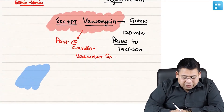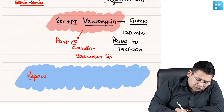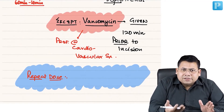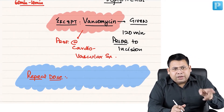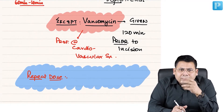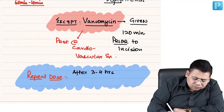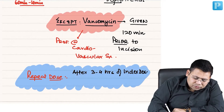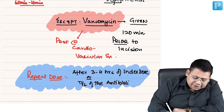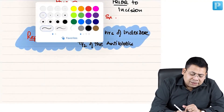When do you give the repeat dose? The repeat dose is given if the surgery is prolonged by more than 3 to 4 hours after the index dose, or after the T-half of the antibiotic given — whichever is less. For example, if the T-half is only one hour, you repeat the drug after one hour.